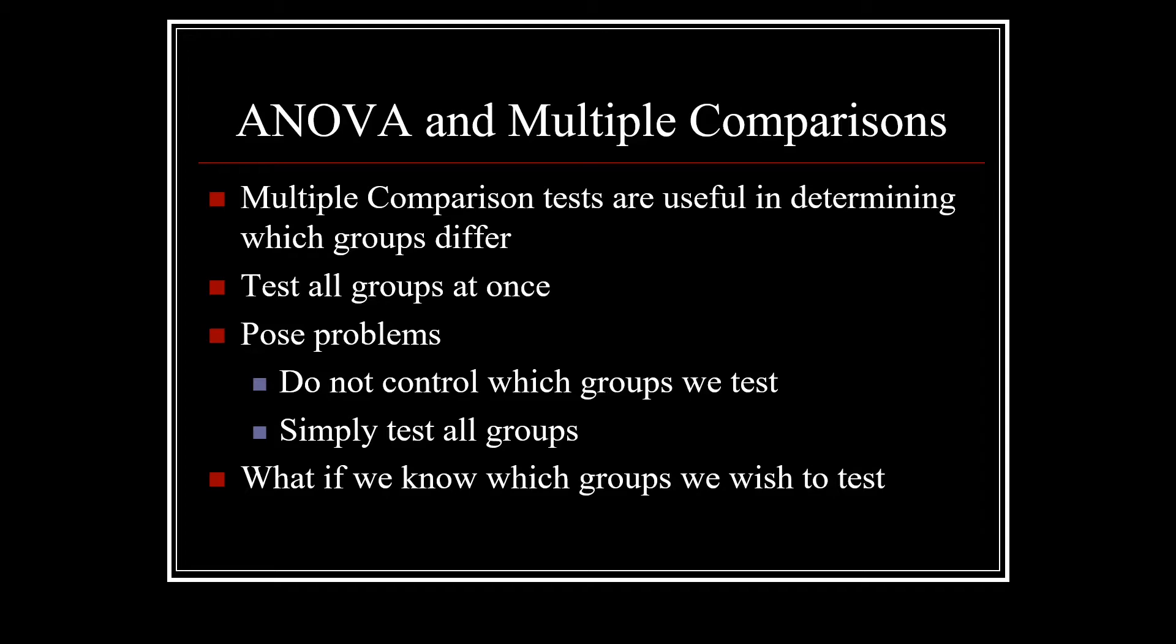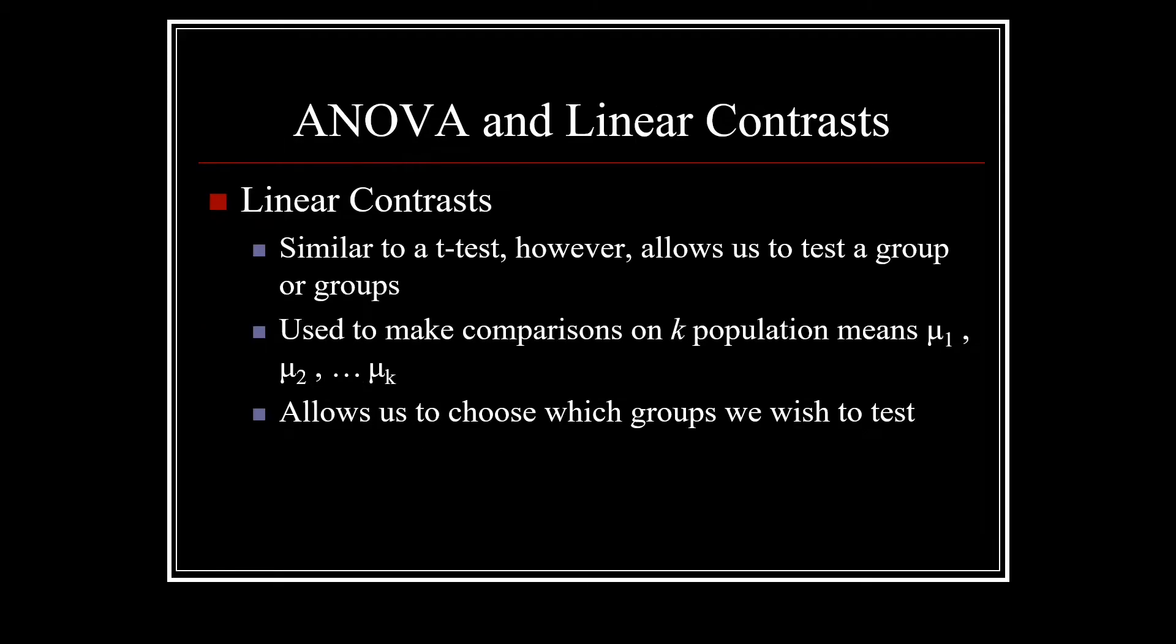While multiple comparison tests are useful in determining which groups differ, they test all groups at once, and this tends to pose problems. One problem is we can't control which groups we test. We're simply testing all groups at once. What if we know which groups we wish to test? Well, in this case we can use what's called a linear contrast.